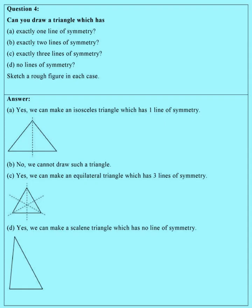Question number four was: can you draw a triangle which has exactly one line of symmetry? We have just seen two examples of isosceles triangles which have one line of symmetry. Second: exactly two lines of symmetry — we cannot have any triangle with exactly two lines of symmetry, so the answer is zero, we cannot draw it. Third: exactly three lines of symmetry — yes, an equilateral triangle has three lines of symmetry. And for no line of symmetry, you draw a scalene triangle. This question is very important and usually comes in MCQs, one-mark questions, or competitive tests.